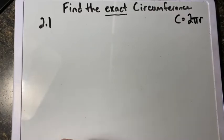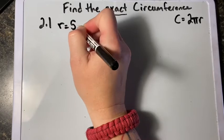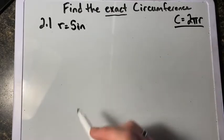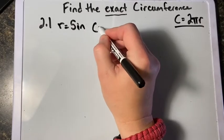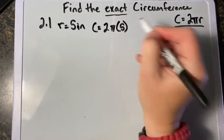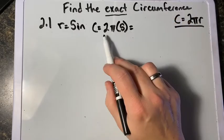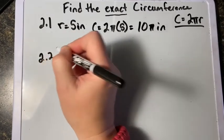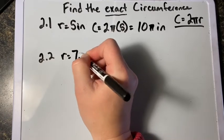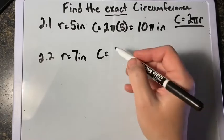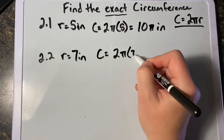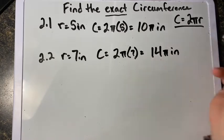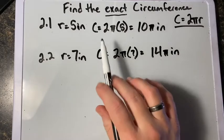For problem 2.1, the radius equals 5 inches. Using the formula 2πr, our circumference equals 2π times 5, so our circumference is 10π inches. For problem 2.2, the radius equals 7 inches. Plugging it into the formula, we get 2π times 7 inches, so our circumference is 14π inches. Please pay attention to when they're asking for an exact circumference.